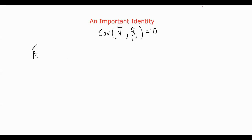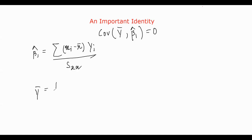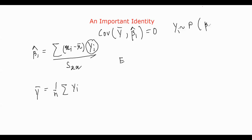So let's write it down. We remember — I hope you remember — β̂₁ is summation of (xi minus x̄) times yi divided by Sxx. And what is ȳ? ȳ is (1/n) summation of yi. So what do you get from here? We are planning to do covariance. Look at the random variables over here: yi follows some distribution with expectation β₀ plus β₁xi, comma σ².